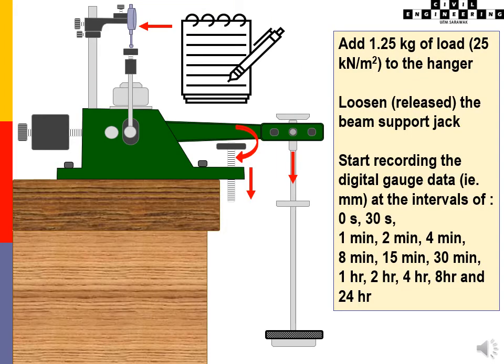Add 1.25 kg of load to the hanger. Release the beam support jack. Start recording the data according to the intervals given.